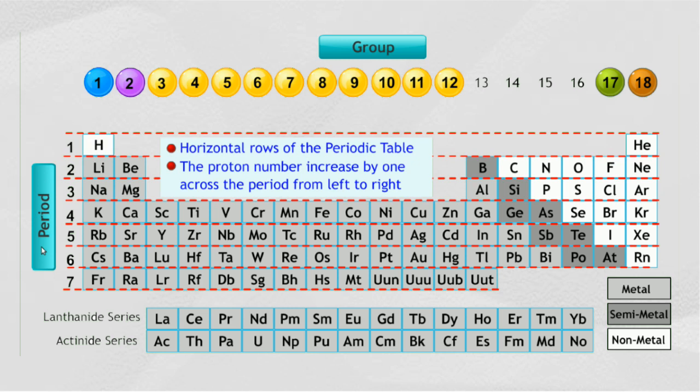Each period contains elements with chemical and physical characteristics which change progressively from metal to nonmetal. Elements are arranged according to the order of their proton number which increases horizontally.